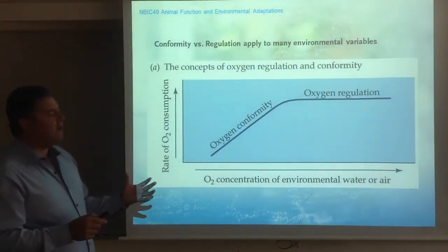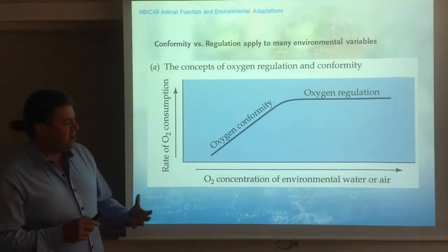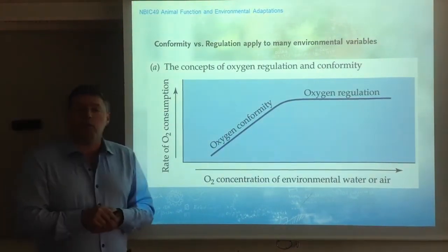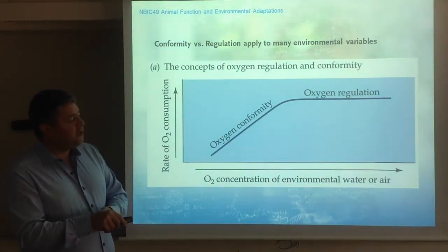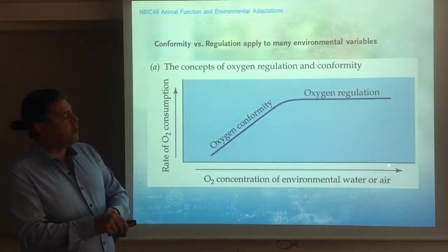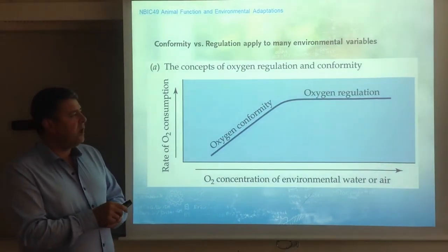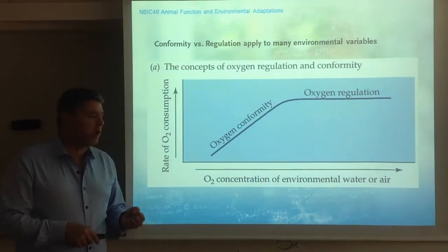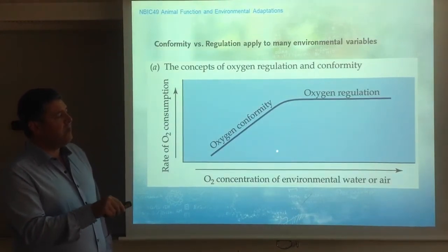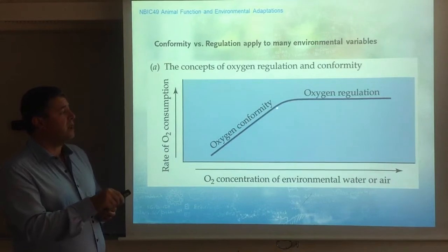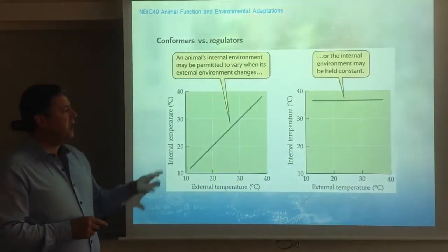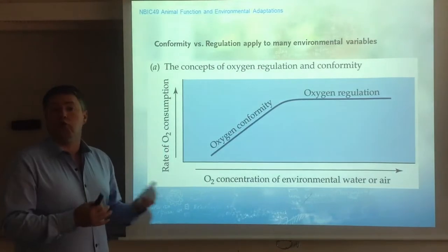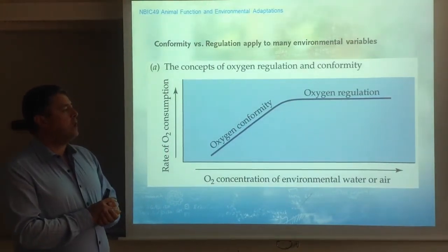Within a certain range of environmental conditions, animals behave as regulators, but when regulation is no longer possible they become conformers. This is illustrated with an oxygen regulation curve: when oxygen levels are within a certain range, the animal keeps its rate of oxygen consumption constant. But below a critical level, when the animal can no longer extract enough oxygen, it becomes a conformer. Animals change strategy based on the conditions they are in.